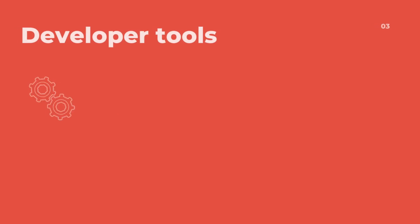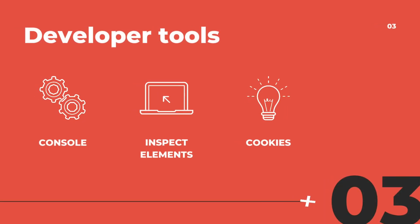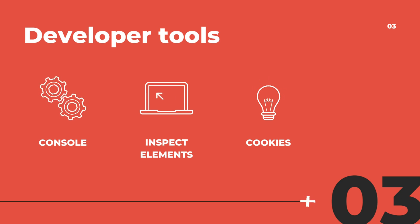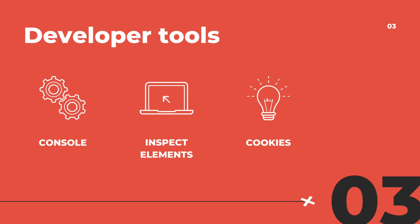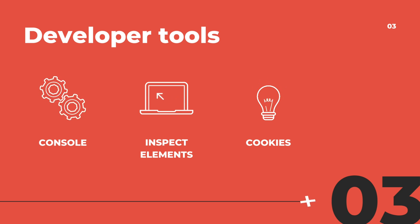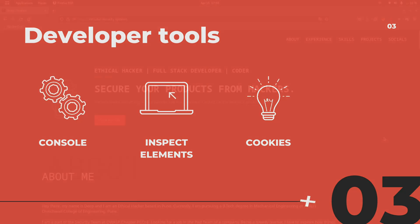Now let's see the developer tools. In developer tools you have your own console where you can execute your own JavaScript. You have the inspect elements tab which can be used to check the HTML elements. HTML and CSS are the codes on which the whole web works — all the pages you see in your browser contain HTML and CSS. You also have a storage tab where you can see and edit the cookies stored inside the browser.